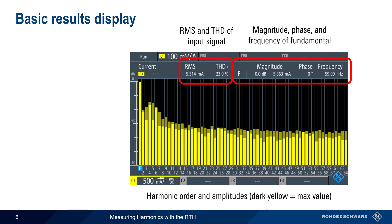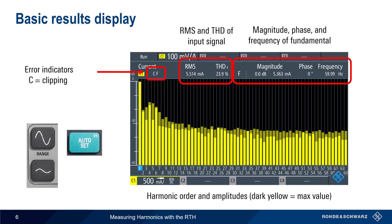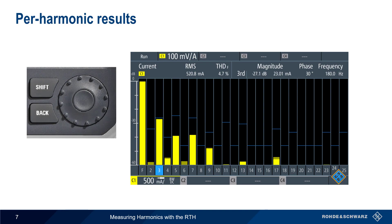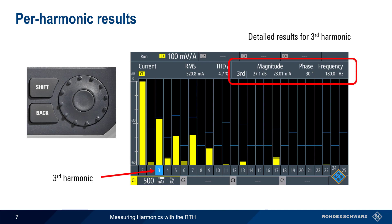Invalid measurement results are shown using two types of error indicators: C and F. C means that clipping is occurring, and this can be corrected using the range keys or the autoset function. F means that the fundamental frequency was not properly detected, in which case the user should manually set the fundamental frequency of the input signal. The rotary knob on the front of the RTH can be used to select each individual harmonic to obtain magnitude, frequency, and phase information for that specific harmonic. For example, here we've selected the third harmonic, highlighted in blue, and the RTH displays the values of magnitude, phase, and frequency for this specific harmonic.